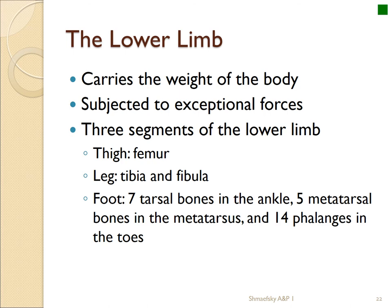Now let's look at the lower limb. The upper leg bone is the femur, and the lower leg has the tibia and fibula — very similar to the radius and ulna of the arm. Instead of carpals we have tarsals, instead of metacarpals we have metatarsals, and we have phalanges just like in the hand. These are corollary bones, with very similar purposes between the upper and lower limbs.